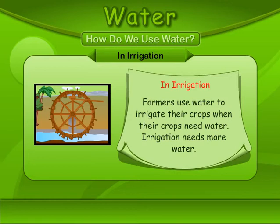Irrigation. Farmers use water to irrigate their crops when crops need water. Irrigation requires more water.